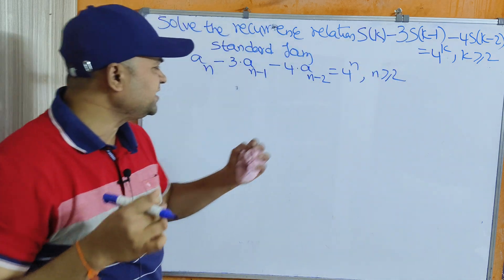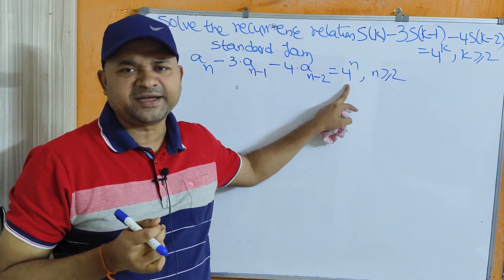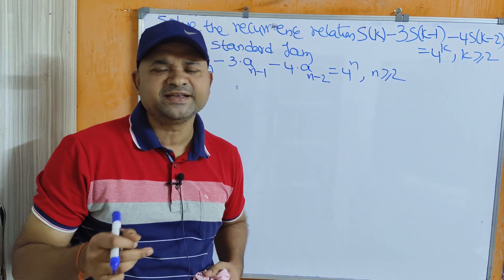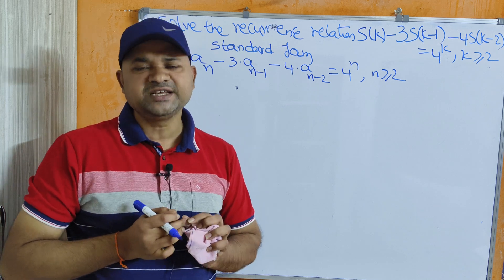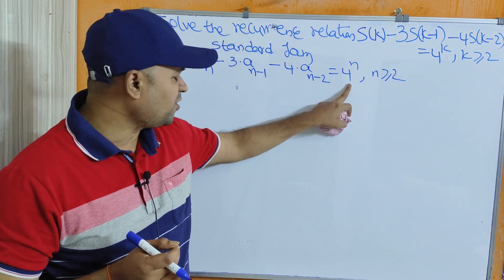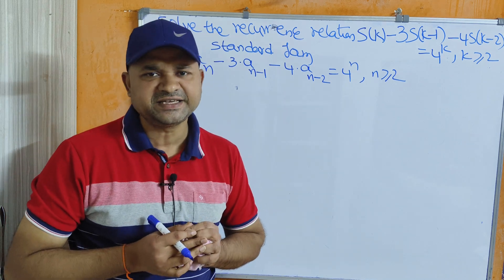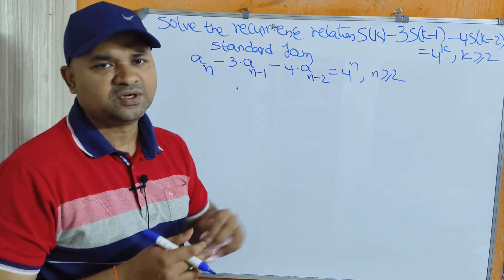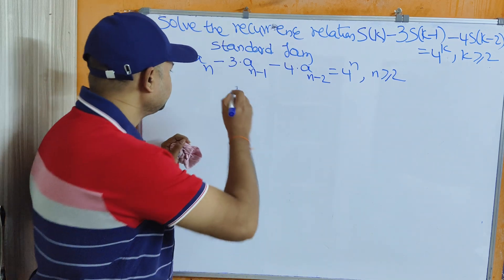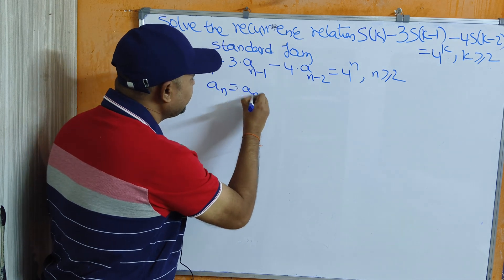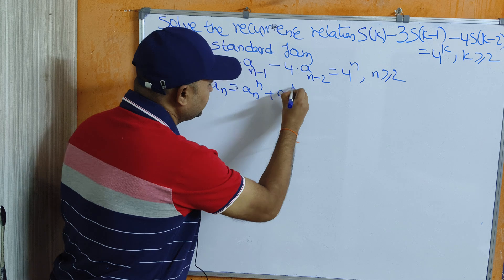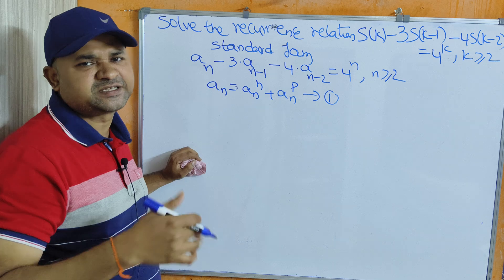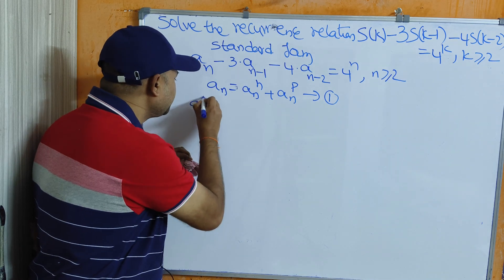If we observe the recurrence relation, the right-hand side part is not equal to 0. We call the right-hand side part f(n). If f(n) = 0 then it is a homogeneous recurrence relation, whereas if f(n) ≠ 0 then it is a non-homogeneous recurrence relation. To solve a non-homogeneous recurrence relation, the solution is a_n = a_n^(h) + a_n^(p), where h means the homogeneous part and p means the particular solution.